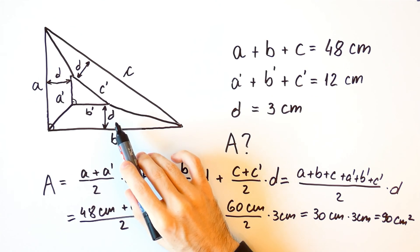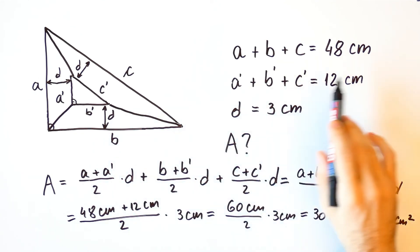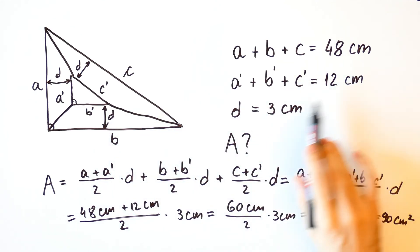So, we were able to calculate the area of this figure using just the perimeters of the two triangles and distance D.